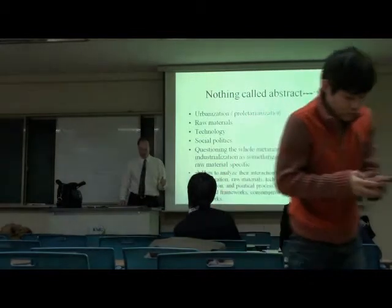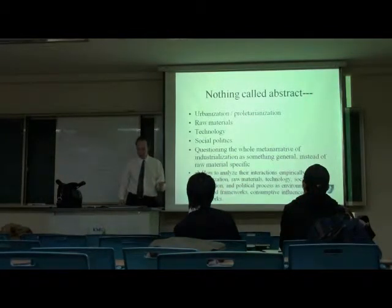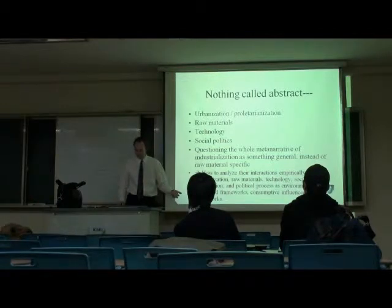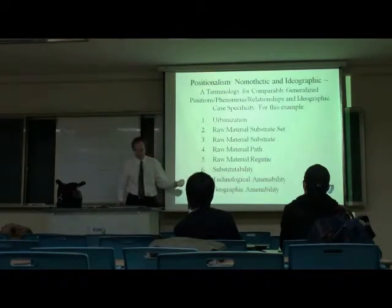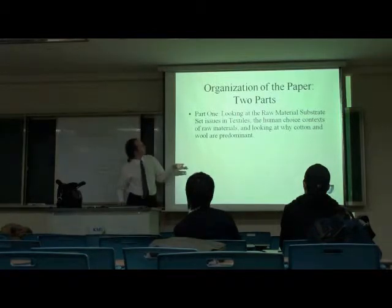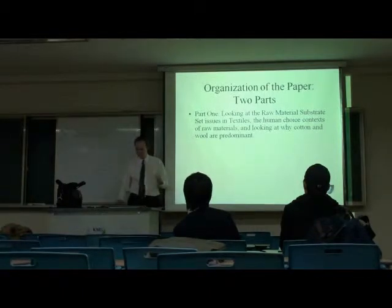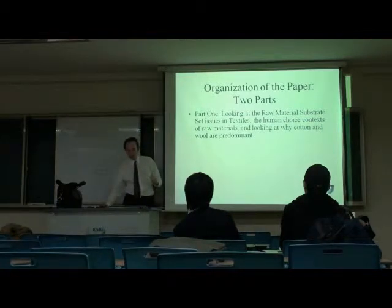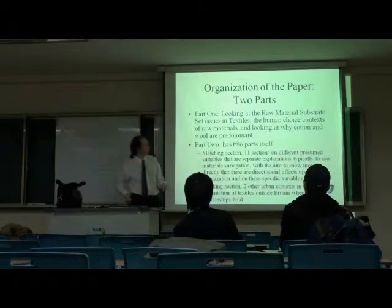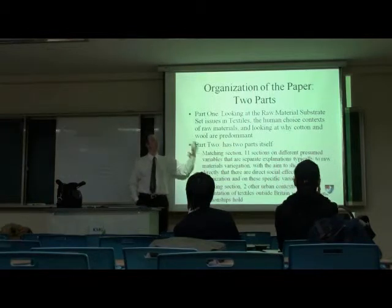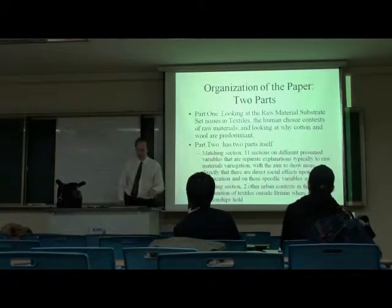How to analyze interactions empirically: if you look at urbanization, raw materials, technology, social stratification, and all of these together, I argue that certain materials matter. Part one — the substrate, the choices of materials. What are the choices of textiles? Why is cotton and wool so predominant? Part two, which I don't discuss here, I try to show that these are causal factors that explain aspects no one had thought of before.